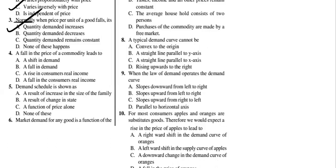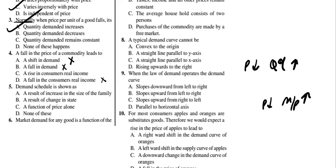A fall in the price of a commodity leads to an increase in quantity demanded — this is a movement along the demand curve, not a shift of demand. It is not a decrease in real income; because prices are decreasing, real income is actually increasing.